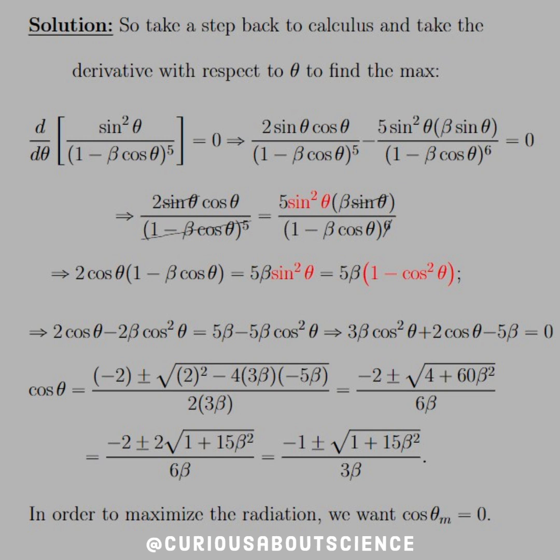Now that we have everything in terms of cosine, the left-hand side goes to 2 cosine theta distributed minus 2 beta cosine squared is equal to 5 beta minus 5 beta cosine squared. So if we combine this into a quadratic, what we see is we have 3 beta cosine squared plus 2 cosine theta minus 5 beta equals 0, and we can solve away the quadratic equation.